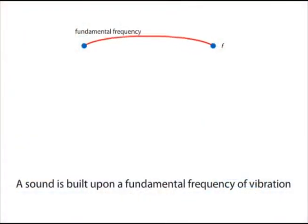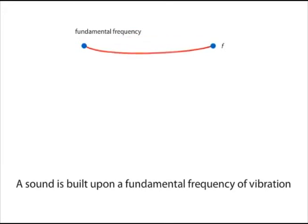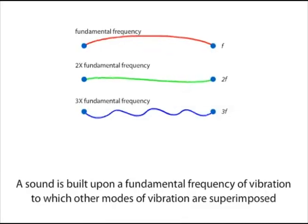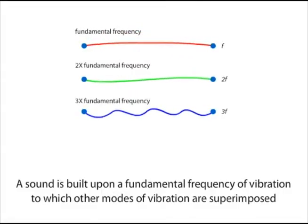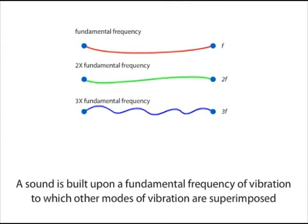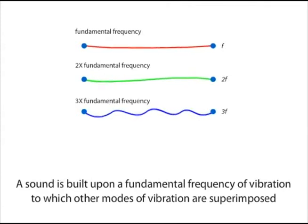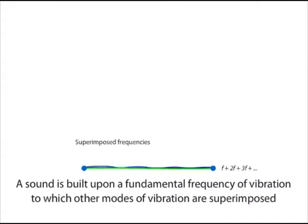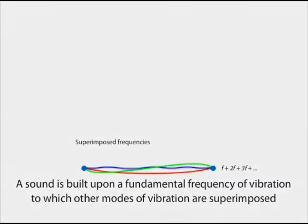These sounds arise because vibrating surfaces, or resonating columns of air, don't vibrate in just one way. In fact, a vibrating string has multiple modes of vibration that all occur simultaneously. Each mode vibrates at multiples of the first mode, and each produces a tone which superimposes on every other. The end result is a sound with a complex architecture.